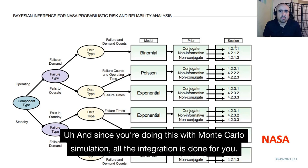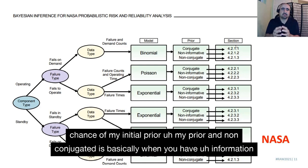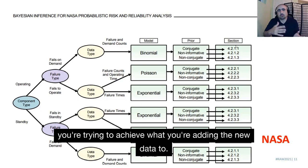You might use some mathematical tools, or you can just say it's a 50-50 or 60-40 percent chance as your initial prior. A non-conjugate prior is basically when you have information on your prior but it's not the same distribution as what you're trying to achieve when adding the new data. It can be used for different applications, and there are multiple ways to do those analyses.